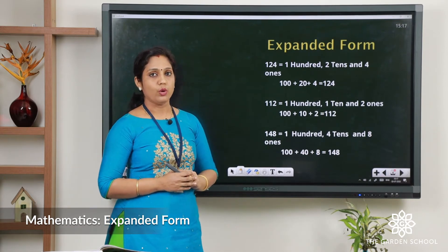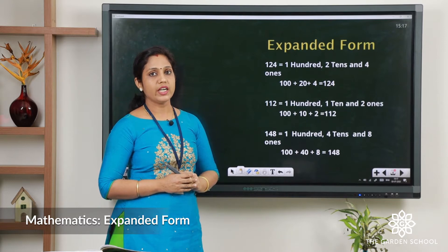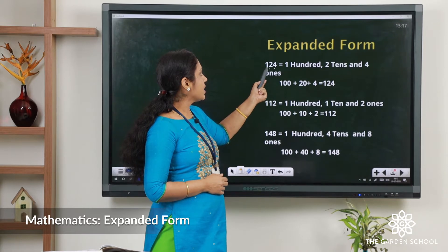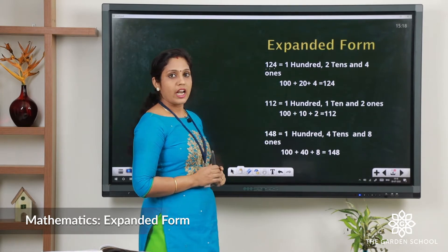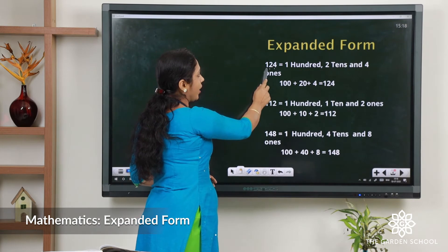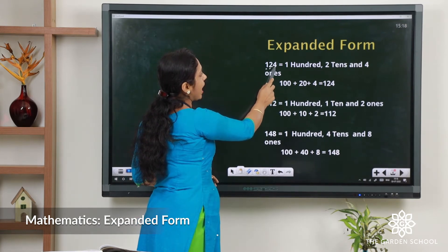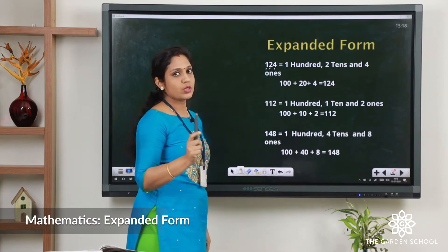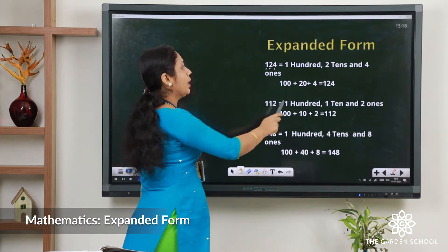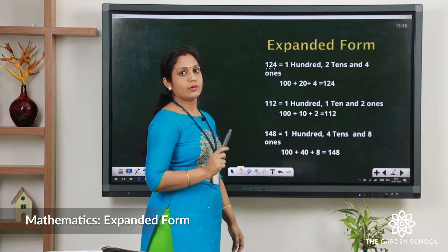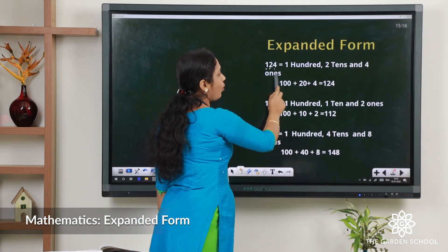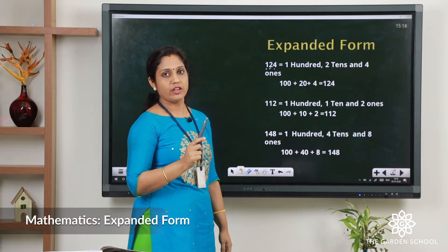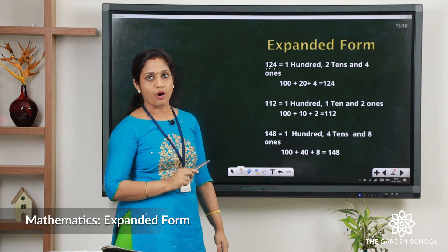Let us move on to a three-digit number. We know 124 is a three-digit number. So let us count ones, tens, hundreds. We can write this as one hundred, two tens, and four ones. One hundred becomes 100 because there is only one hundred in that, plus two tens is 20, plus four ones is 4, so the number becomes 124. This is the way we write in expanded form.